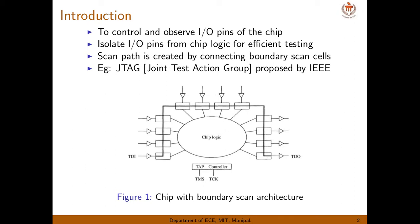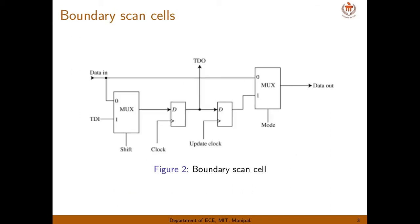Now we will see what a boundary scan cell is. A boundary scan cell consists of two MUXs and two flip-flops. It has four inputs: TDI, shift clock, update clock, and one output TDO. One more controlling signal is mode.